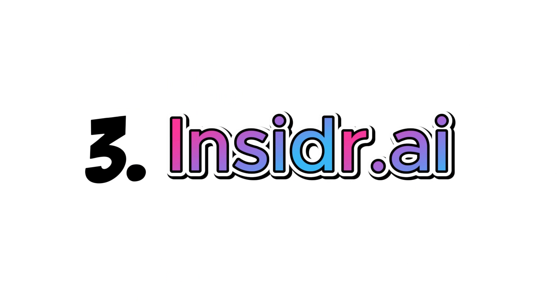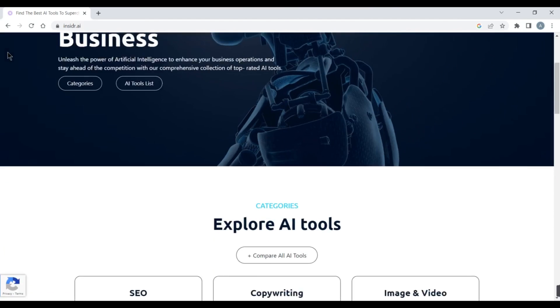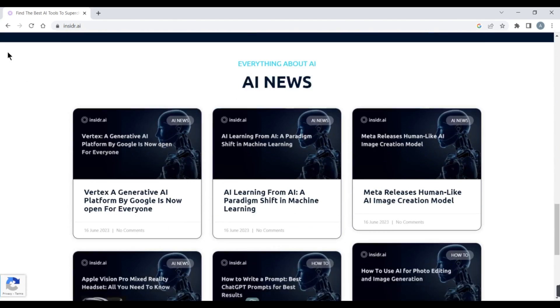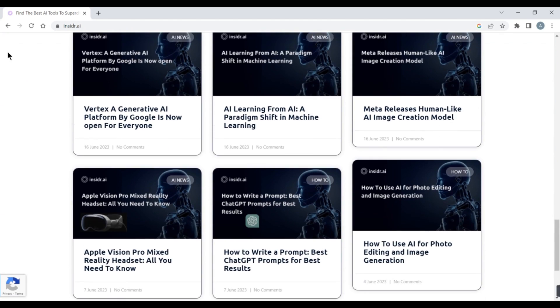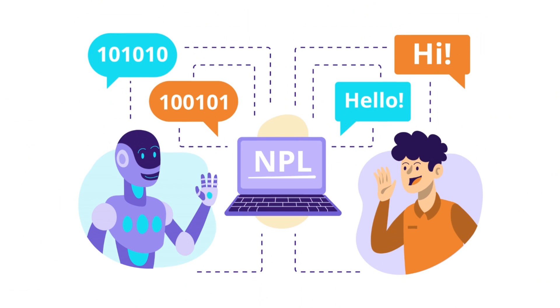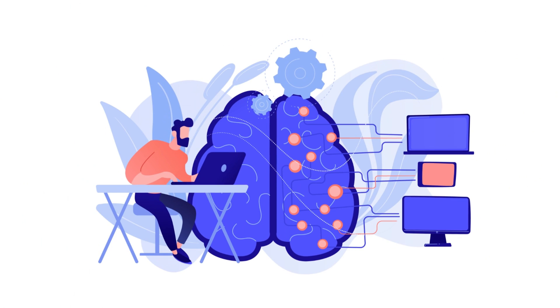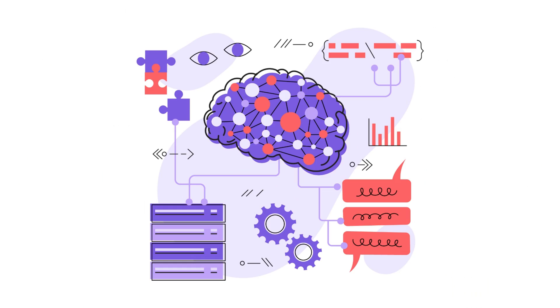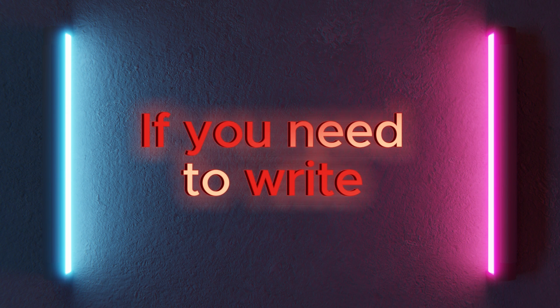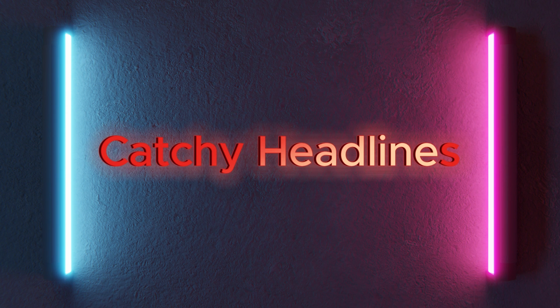3. Insider. Insider is an AI-powered tool that helps you discover hidden patterns and insights from your data. Insider can analyze your data using natural language processing, machine learning, and deep learning techniques, and provide you with actionable recommendations.